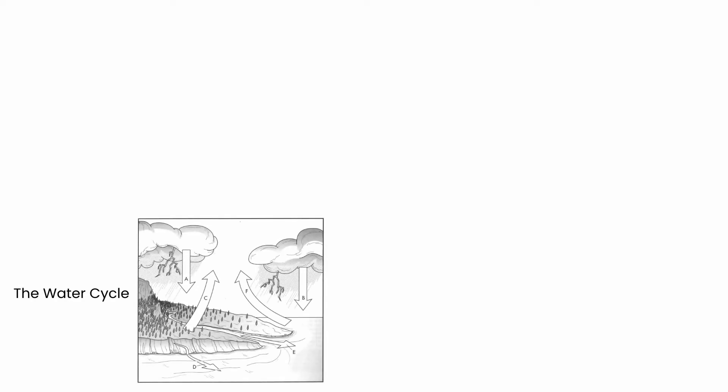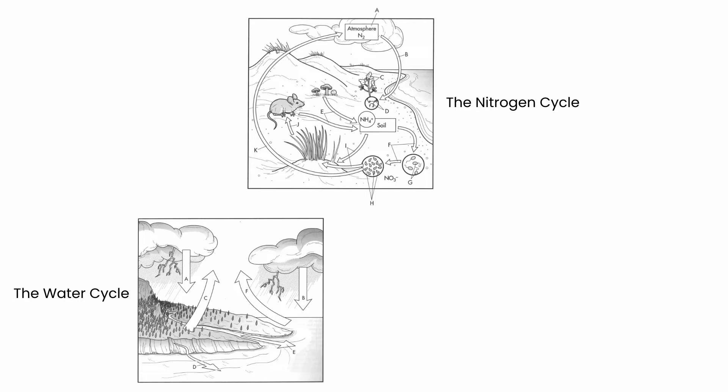There are three main cycles we're going to look at in this course, though there are other cycles as well. The first is the water cycle — how water cycles between the atmosphere and living things. We'll also look at the nitrogen cycle, which is how nitrogen is cycled through the atmosphere to living things through bacteria, and we'll see how important bacteria are to this process.